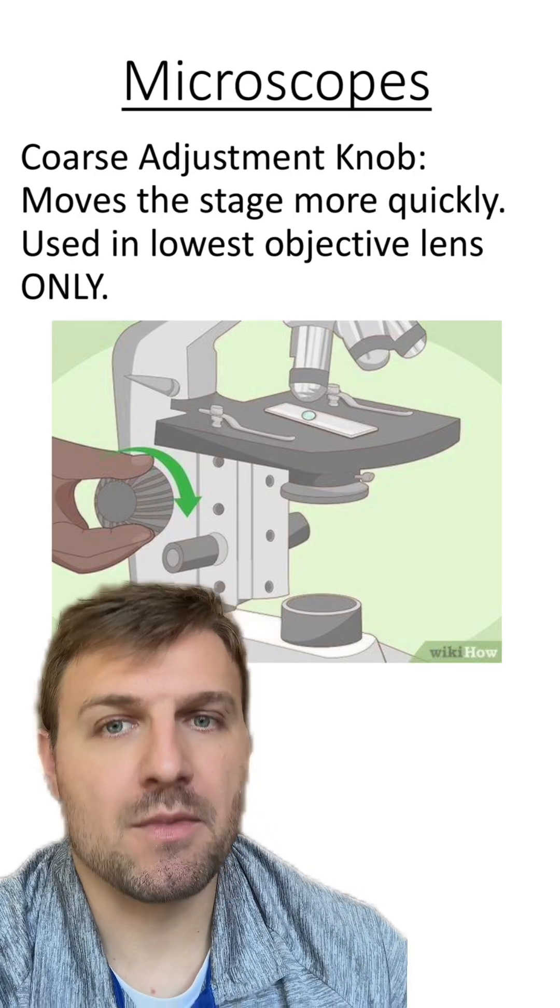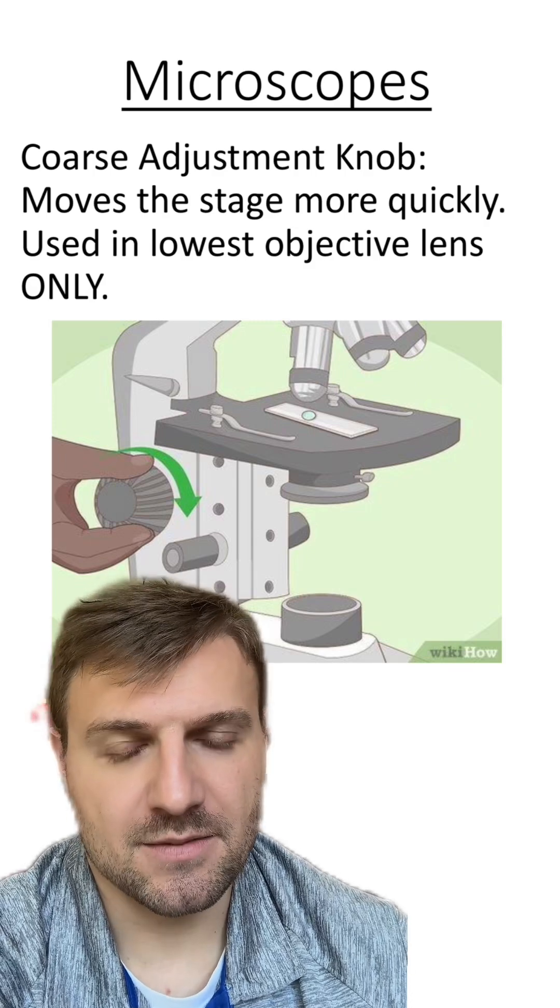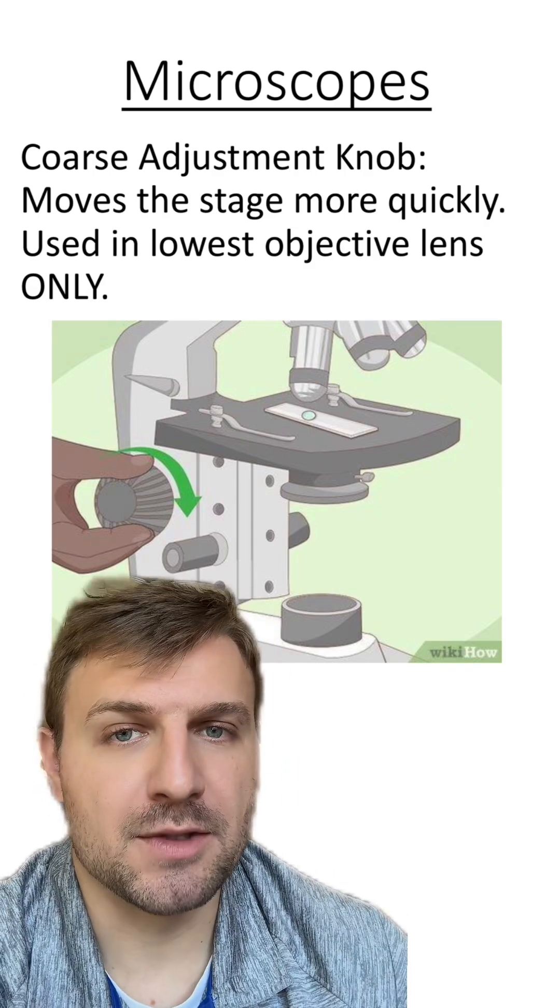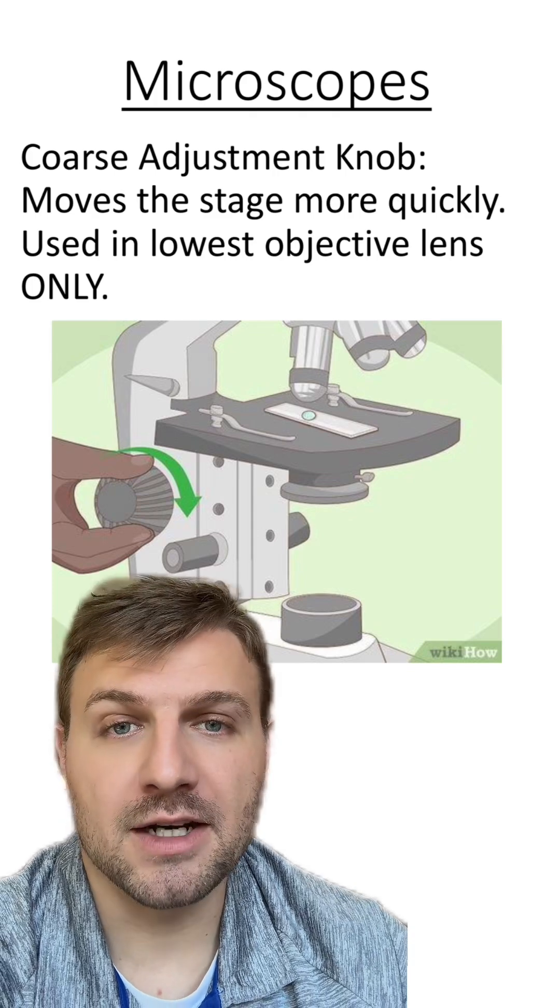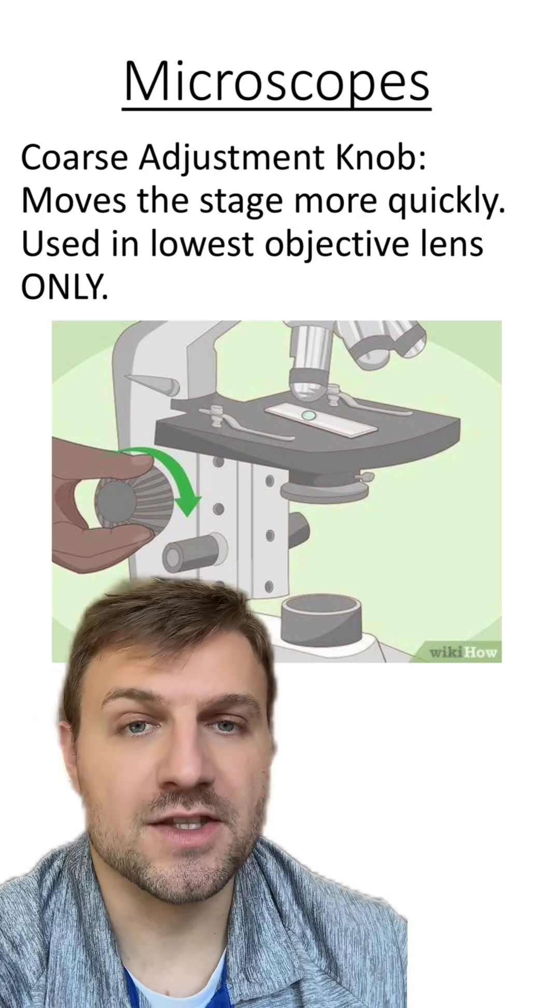Now, it's really important to remember that you only use the coarse adjustment knob on the lowest objective lens. If you use the coarse adjustment knob on the medium or high magnification lenses, you might damage the lenses, since how fast it moves the stage up and down.